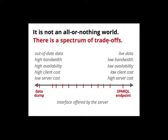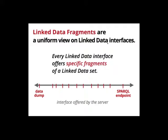Traditionally, querying linked data on the web has always been presented as either a SPARQL endpoint or a data dump — either you go all the way or you let the client do everything. With a SPARQL endpoint, the server is expensive, the client is cheap, availability is hard, but data is live. With a data dump, the server costs very little, but client costs are high in infrastructure and knowledge; availability is fully in the client's control, bandwidth required is very high, and data can get outdated quickly. We need to look at all the interfaces in between — can we bring more nuance to this story?